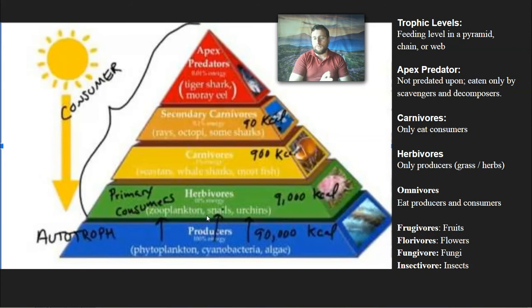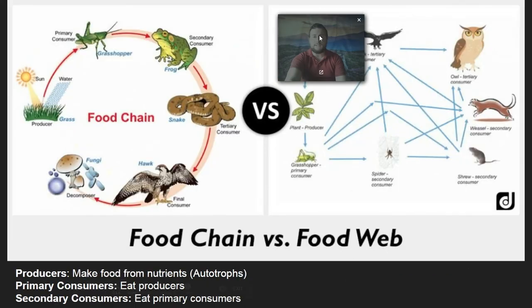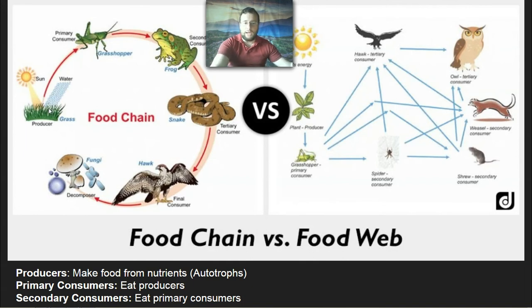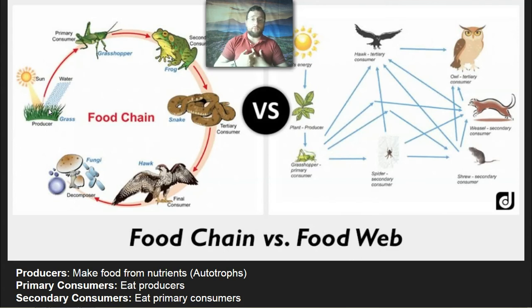A couple of other terms: fungivores are eaters of fungus and insectivores are eaters of insects. What you actually need to know is that this is the same concept whether you look at food chains or food webs. Producers will be the start of the chain or web — they make food from nutrients using the energy of the sun. There are ecosystems not reliant on the sun, but in general we call producers autotrophs because 'auto' means self and 'troph' means eating, so they make their own food.